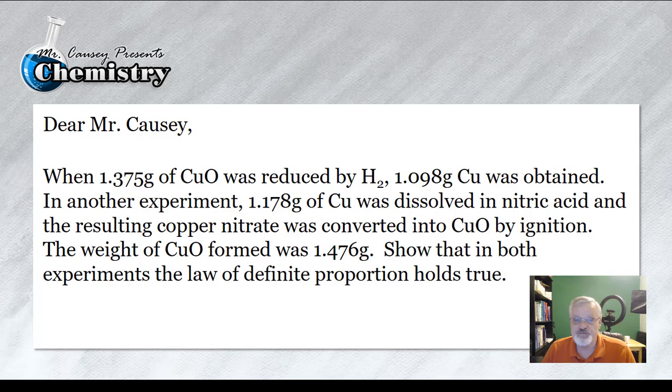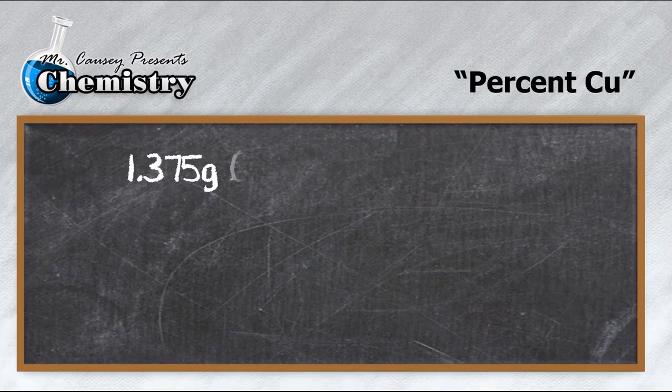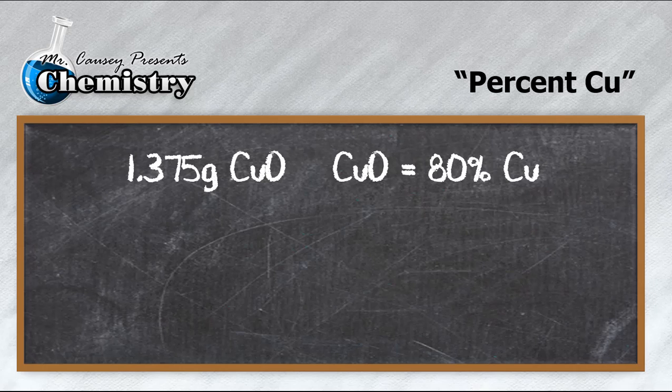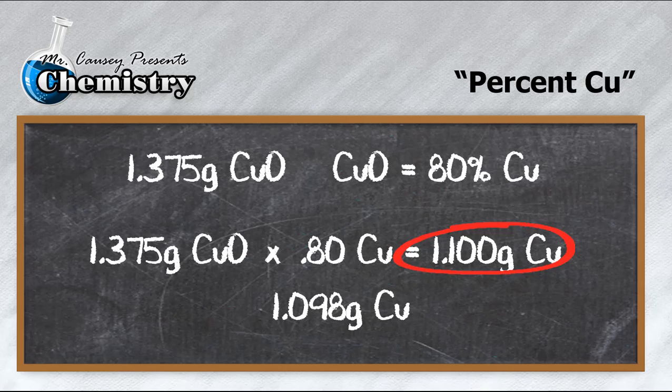So let's go back to the problem and notice that we were given 1.375 grams of CuO and it was reduced to 1.098 grams of copper. Great! To the blackboard and let's figure out the percent copper. 1.375 grams of CuO multiplied by 0.80 and we get 1.100 grams and remember that we ended up with 1.098 grams of copper. That's pretty dang close. I'd say that we proved that the law of definite composition is true.